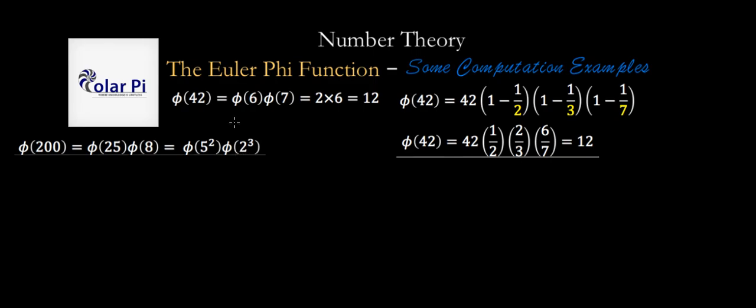And remember, from the video on φ on primes to a power, we know that φ of p to the k, where p is a prime, φ(p^k) is equal to, we said a couple of things, but both of them are equivalent to p^k minus p^(k-1). So φ(p^k), which is equal to p^(k-1) times (p-1) is the same as p^k times (1 - 1/p). But it's also the same as p^k minus p^(k-1).